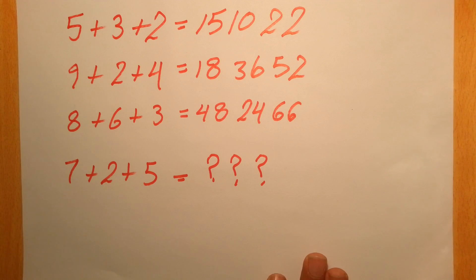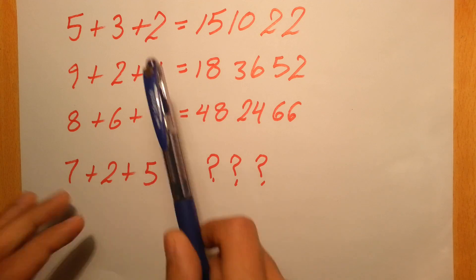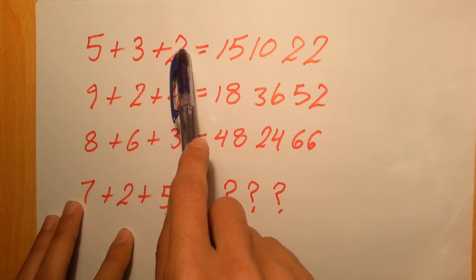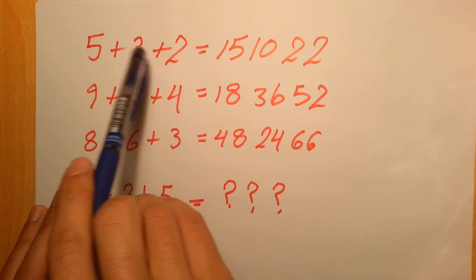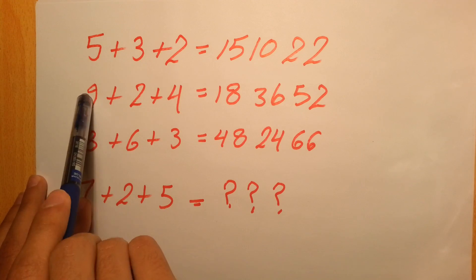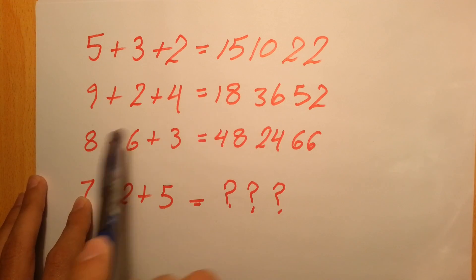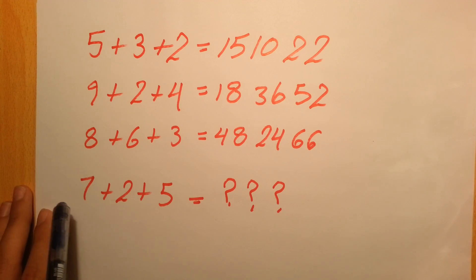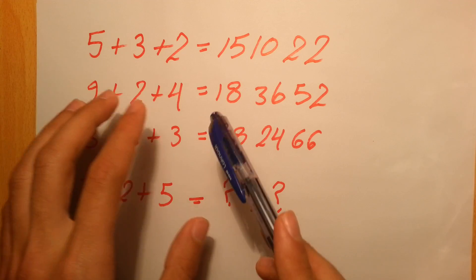In this riddle you're given three equations. You have 5+3+2 gives you this number, 9+2+4 gives you this number, 8+6+3 gives you this number, and then you have 7+2+5 and you have to guess the solution.